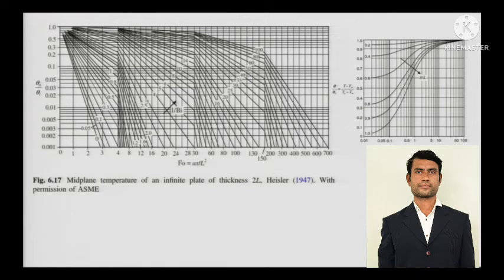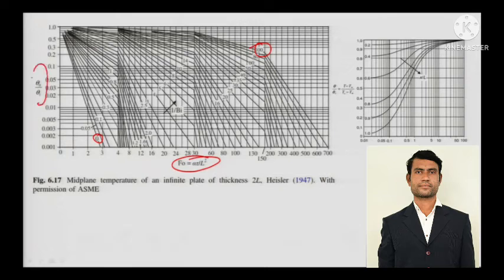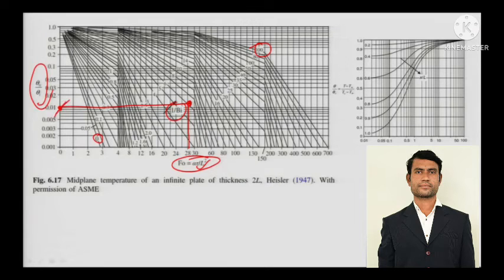Now let us come to this kind of numerical — graphical analysis. Graphical analysis is used when the Biot number is greater than 0.1. On the x-axis is the Fourier number; on the y-axis is 1 by Biot number, increasing from 0 to 100. The other y-axis has the temperature profile. To find the centerline temperature, calculate the Fourier number and 1 by Biot number, draw a vertical line at the Fourier number intersecting the matching 1/Bi curve, then draw a horizontal line — that gives you theta by theta naught, which is the temperature profile at the centerline, i.e., mid-plane where x equals 0.